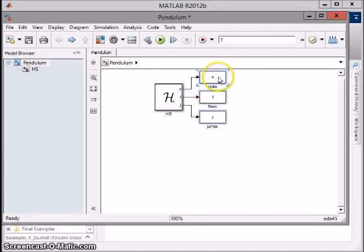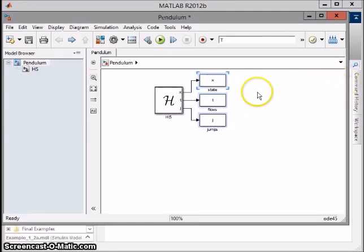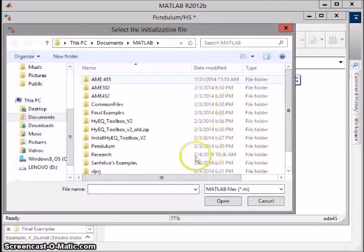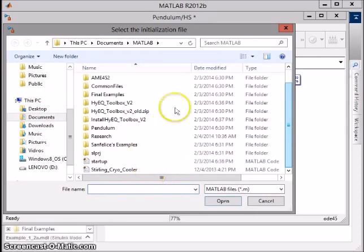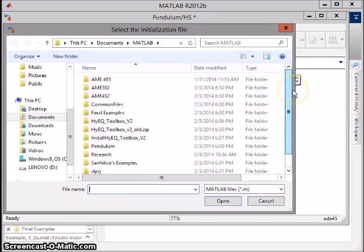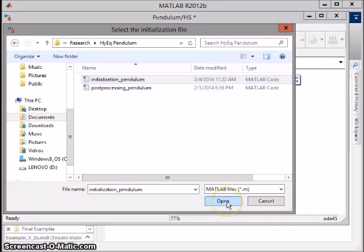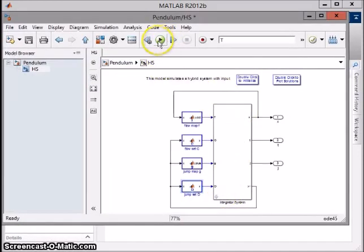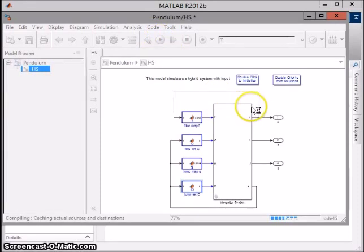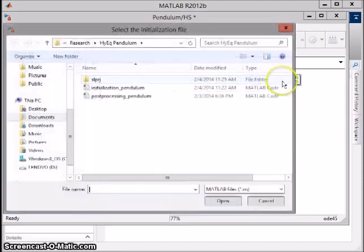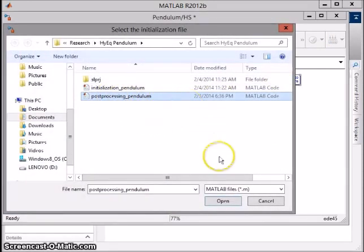We're now ready to run the simulation. Double click the box to initialize. Find our initialization folder. Run the simulator. Open the simulation. Now double click to plot the solutions. Again, locate the post-processing pendulum. Open it. The results are shown.